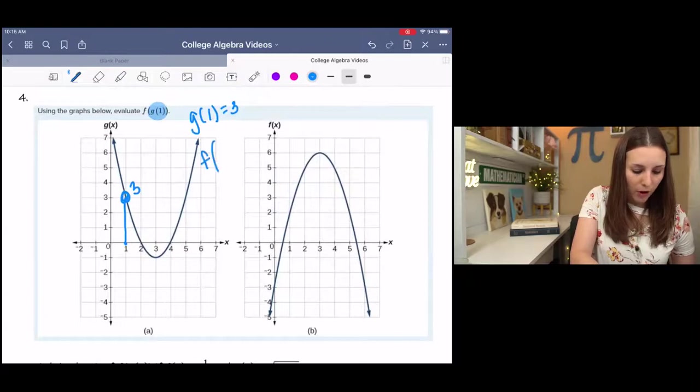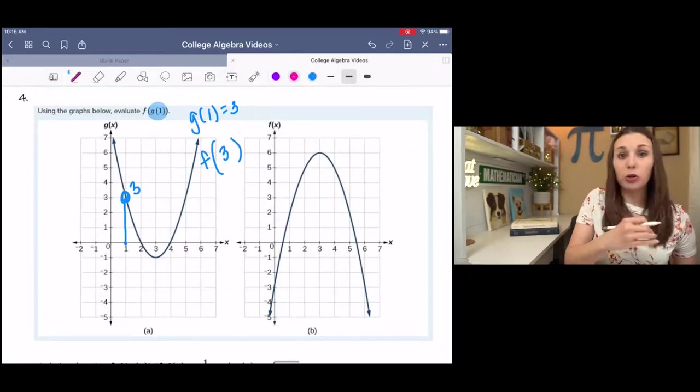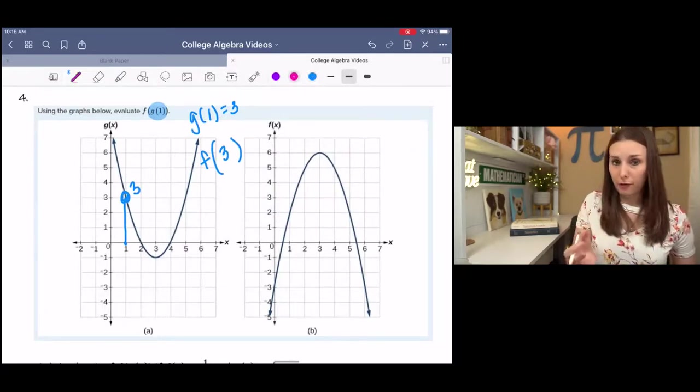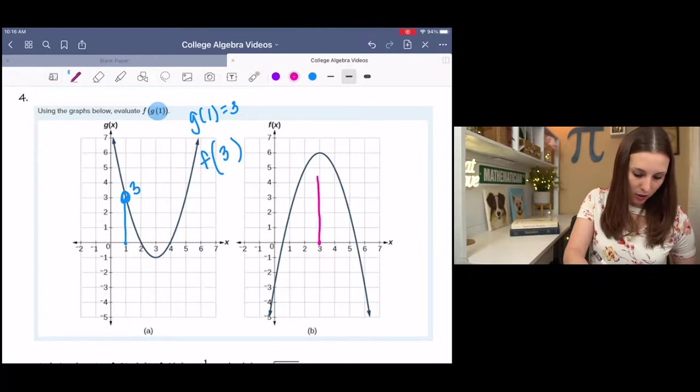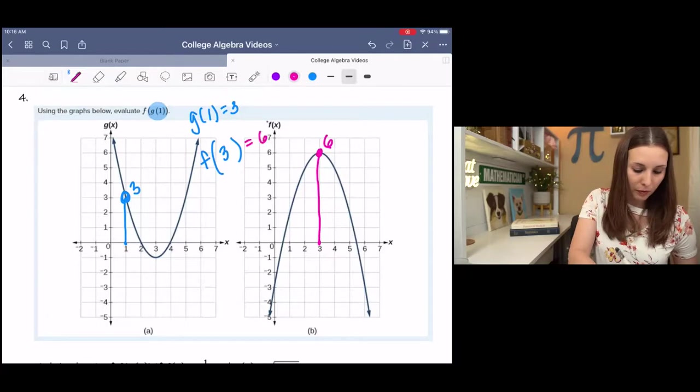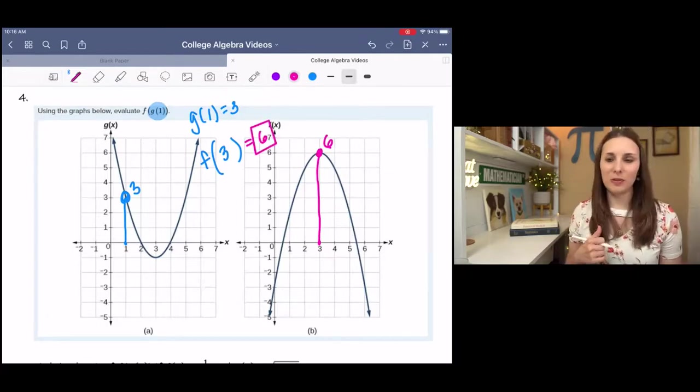Then we need to find f of g of 1, which is 3. So you go to the f graph, locate 3 as x, and find the y value that is related to it. Which is 6. Final answer. Isn't that kind of fun? I like those. I think they're fun.